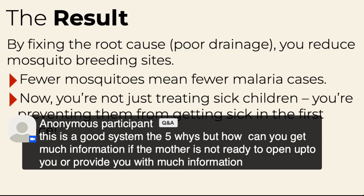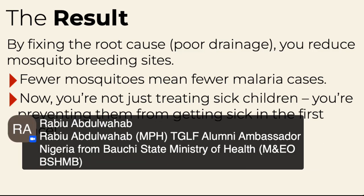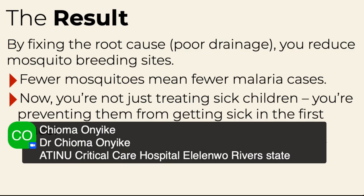An anonymous participant asks: 'This is a good system — the five whys — but how can you get much information if the mother is not ready to open up or provide information?' I would say: maybe that is your root cause analysis. Ask why she is not ready to open up to you — and I'm being very serious, not facetious. That is where you can start your root cause analysis. We'll be starting Monday, going into the actual exercise and encouraging you to work with each other.